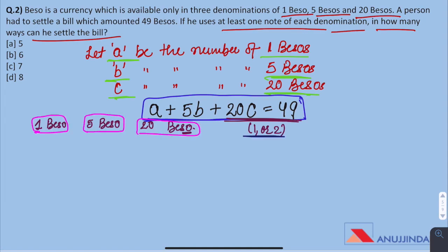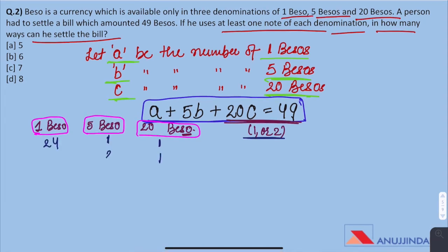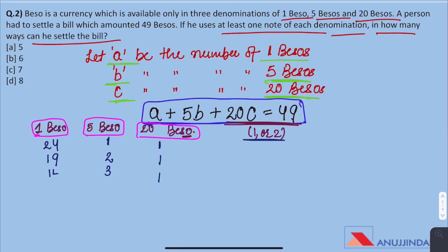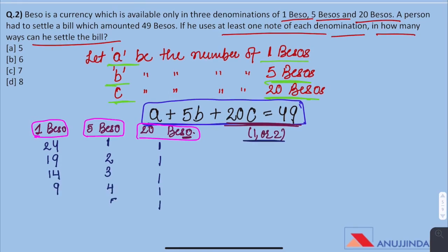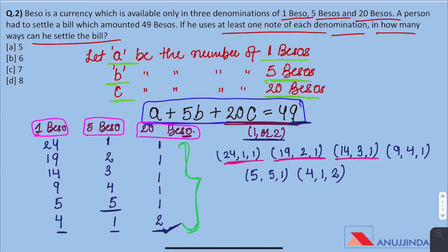Taking the two cases: when C = 1, the possible combinations for (B, A) are (1, 24), (2, 19), (3, 14), (4, 9), and (5, 4) — B cannot exceed 5 otherwise the sum exceeds 49. When C = 2, the only possible combination is (1, 4). These are the six possible cases for settling 49 besos using denominations of 1, 5, and 20 besos.